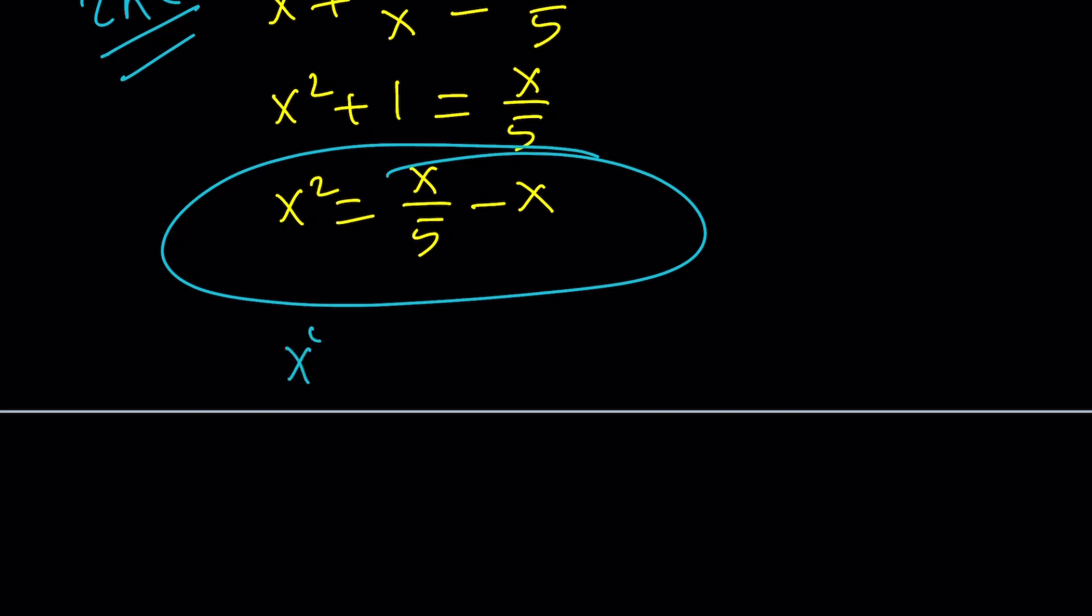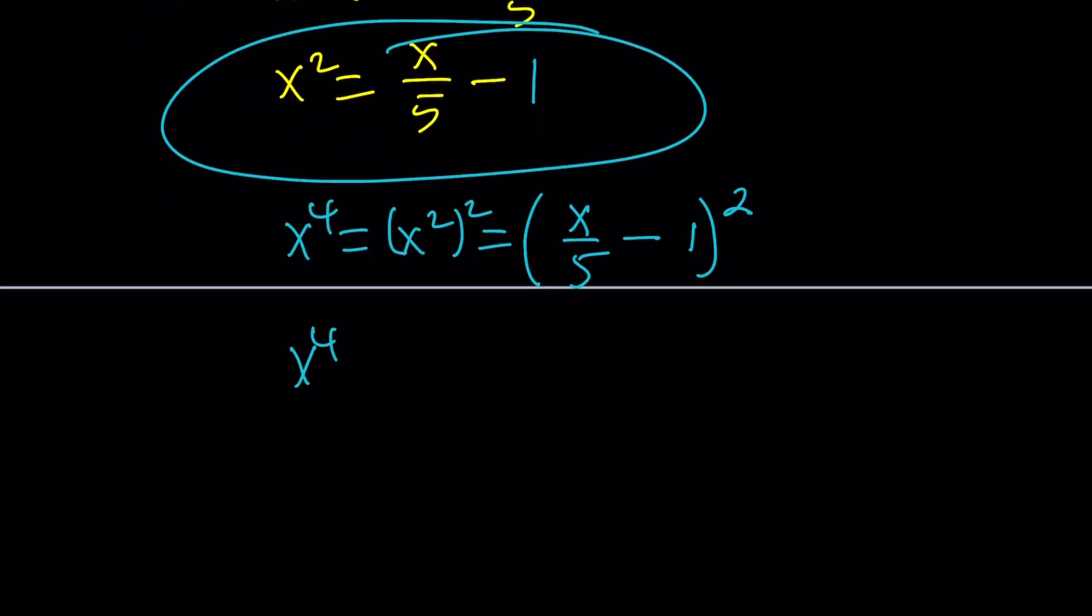But what is x to the fourth power? Of course, you're going to have to square x squared, which is equivalent to square. And this, by the way, that should be a 1, not a minus x. I know that's a mistake. Okay, here we go. We're going to square this.